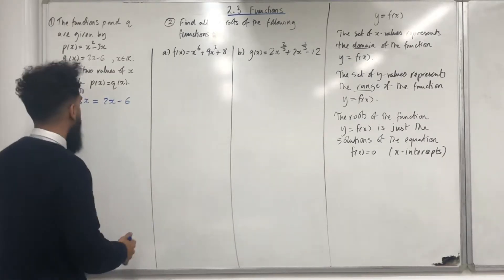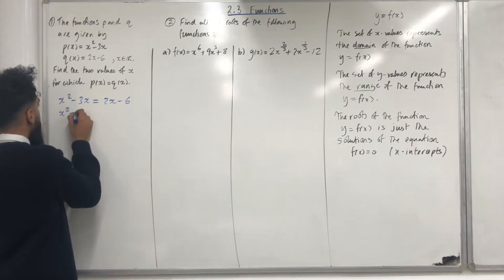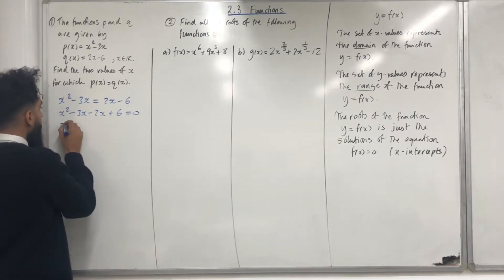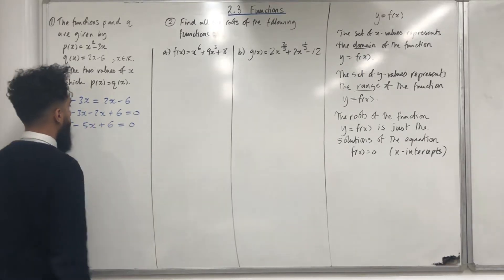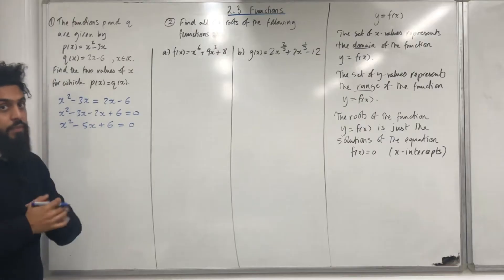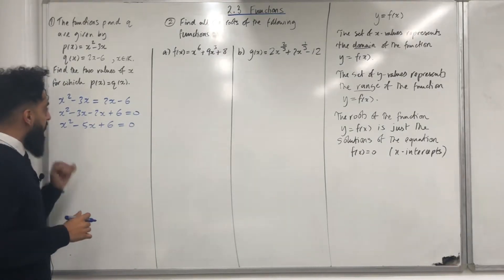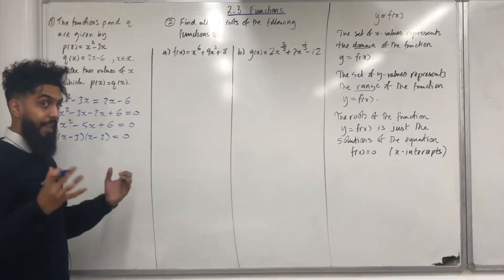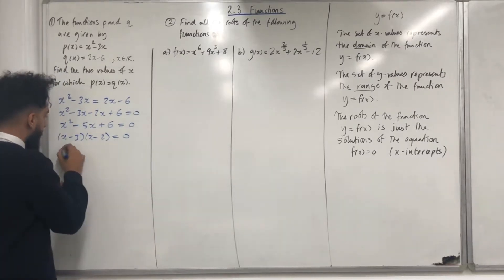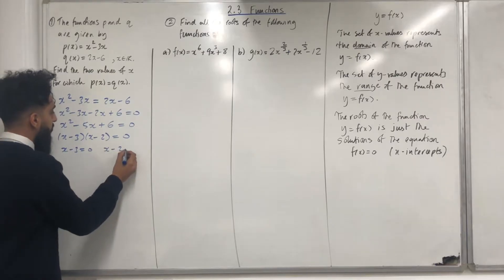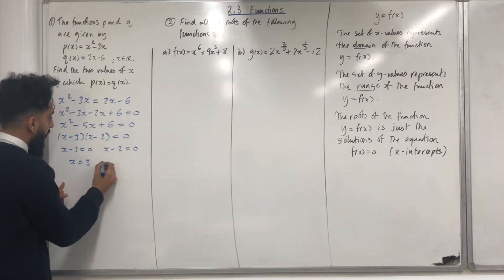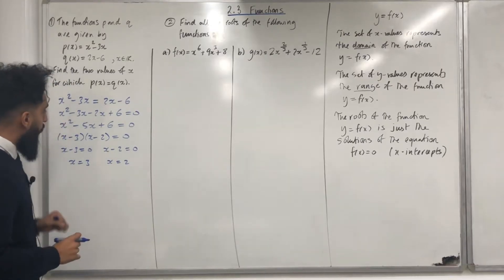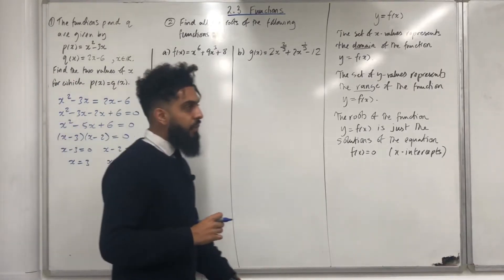Now, take everything to the left-hand side. So, I get x squared minus 3x minus 2x plus 6 is equal to 0. Simplifying this gives x squared minus 5x plus 6 is equal to 0. Factorizing the quadratic gives x minus 3 in brackets, x minus 2 in brackets, equal to 0. Setting each bracket equal to 0: x minus 3 equals 0, x minus 2 equals 0. Hence, x is equal to 3 and x is equal to 2. Therefore, the two values of x for which p of x is equal to q of x are x equal 3 and x equal 2.